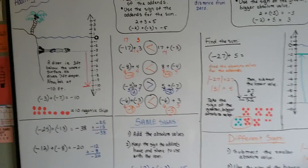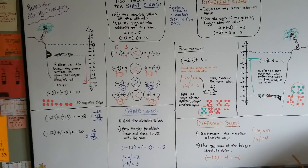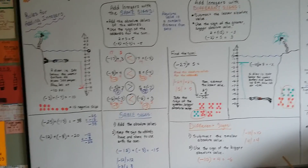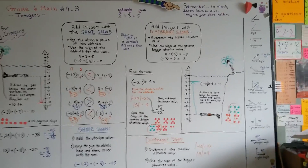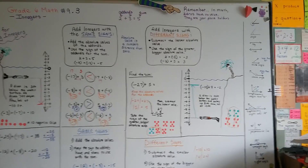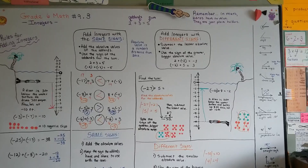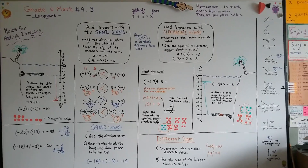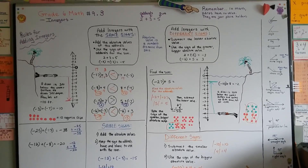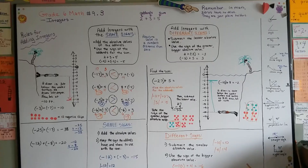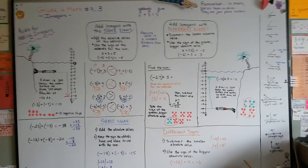Those are the rules for adding integers. When the signs are the same, get the absolute values of the addends, add them up, and use the sign they're sharing. When the signs are different, get the absolute values, take the smaller one away from the bigger one, and use the sign of the bigger one. Think of digging holes and making hills, or your negative and positive chips, or the diver. See you next video — keep up the good work!